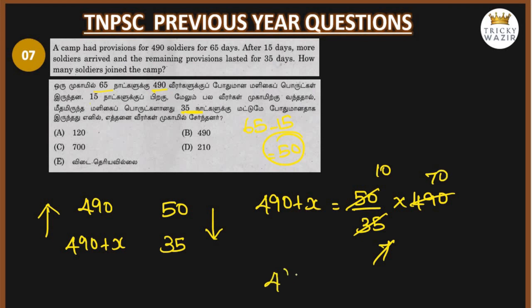490 plus X equals 700. Moving 490 to the other side: X equals 700 minus 490, which equals 210.